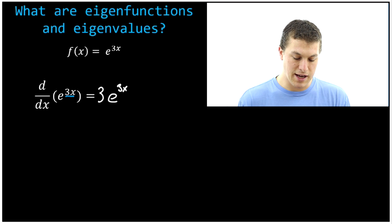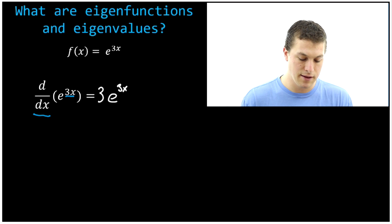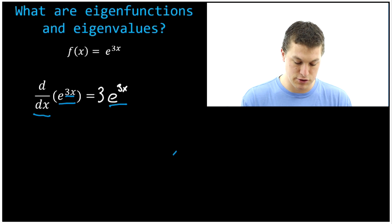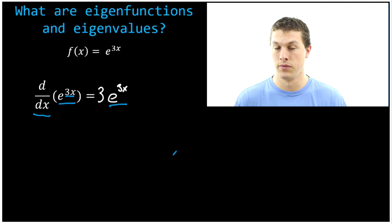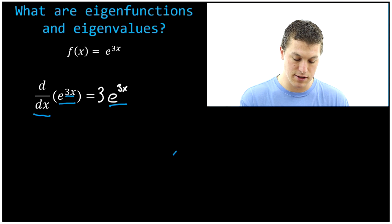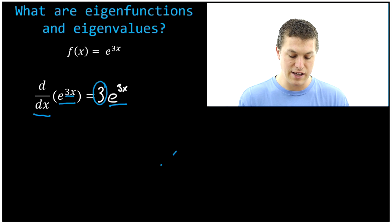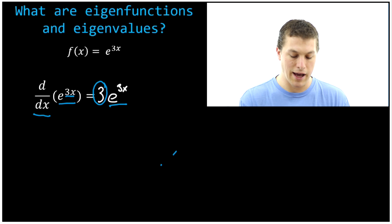This is actually an interesting situation, because on the left-hand side we have our derivative operator acting on a function, and we get back that same function — on both sides you see e to the 3x. The only difference is that on the right-hand side you get this extra 3. In this case, e to the 3x is called an eigenfunction, and that 3 is called an eigenvalue.